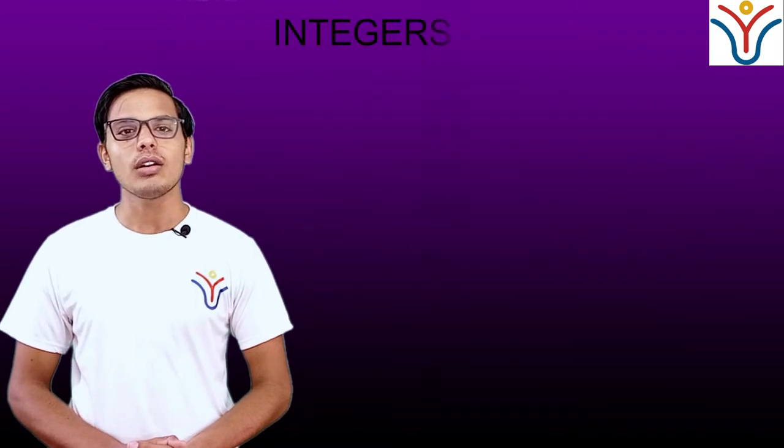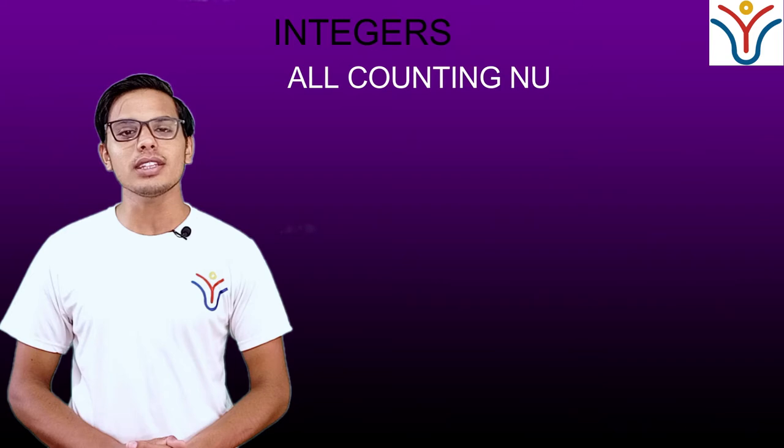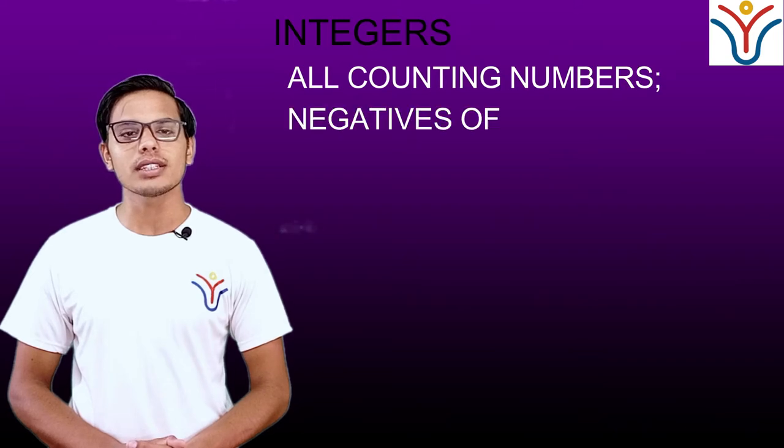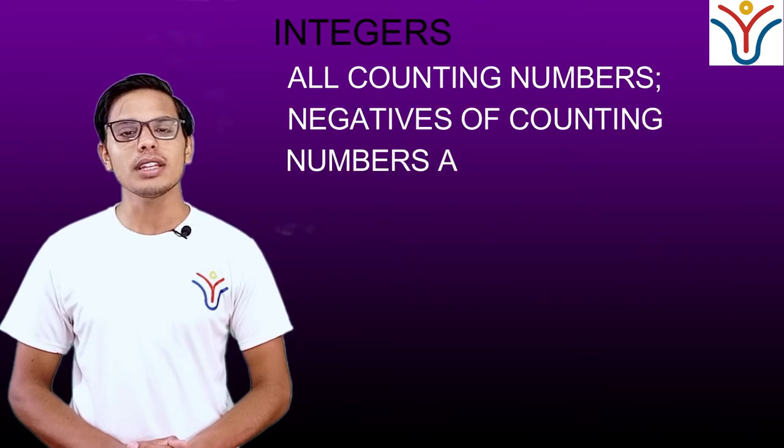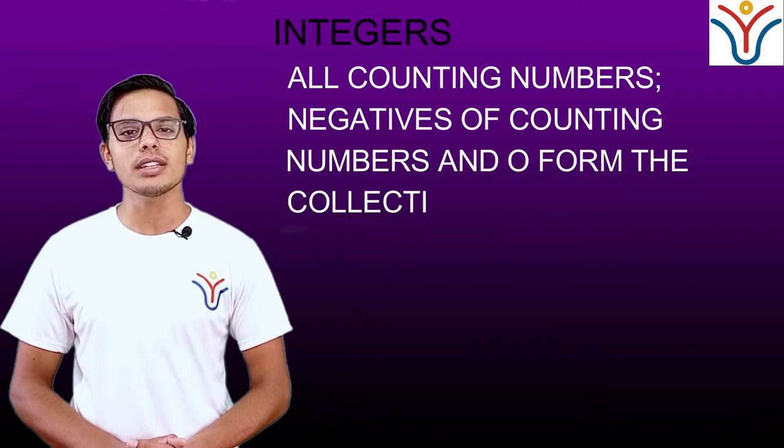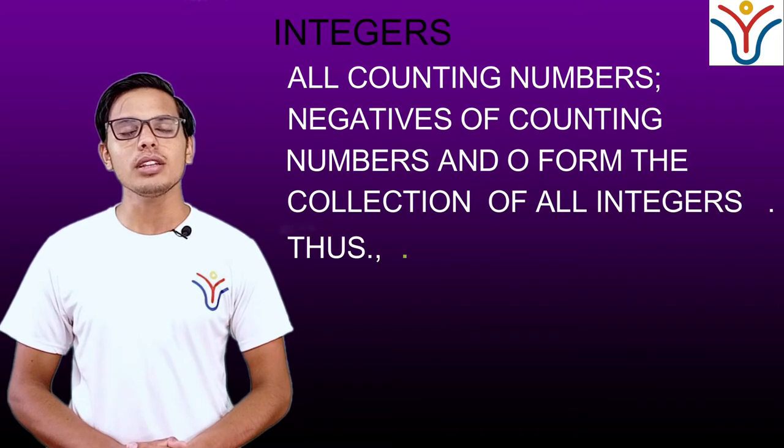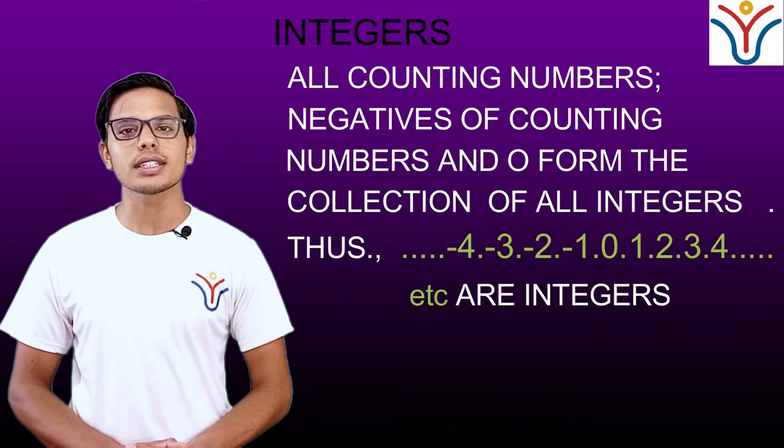Integers: All counting numbers, negative of counting numbers, and 0 form the collection of integers. Thus, -4, -3, -2, -1, 0, 1, 2, 3, 4, 5 are known as integers.